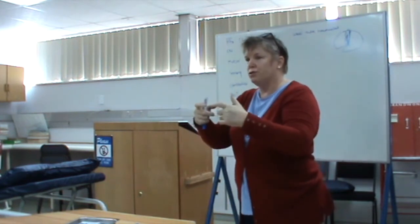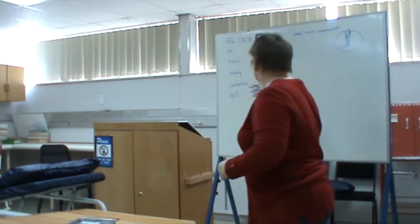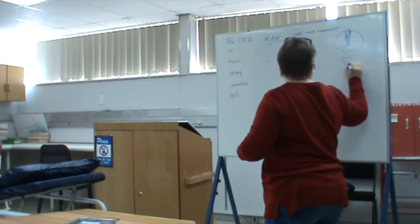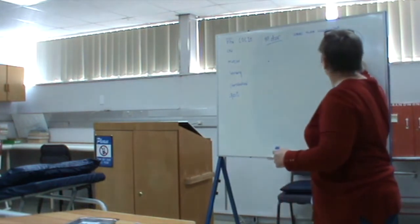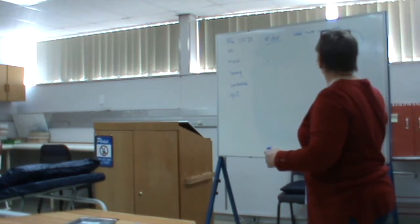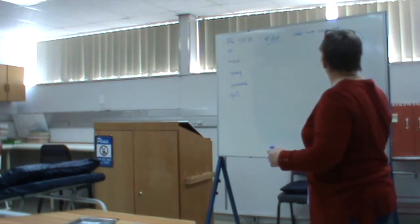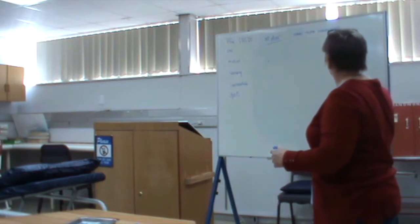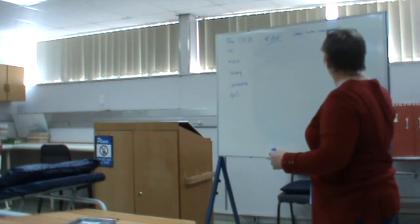Then through the midbrain it goes through the crus — the Mickey Mouse ears of the midbrain. That is the crus of the midbrain. Then in the medulla, which is not so nice, we have the pyramid and the olive on the side.